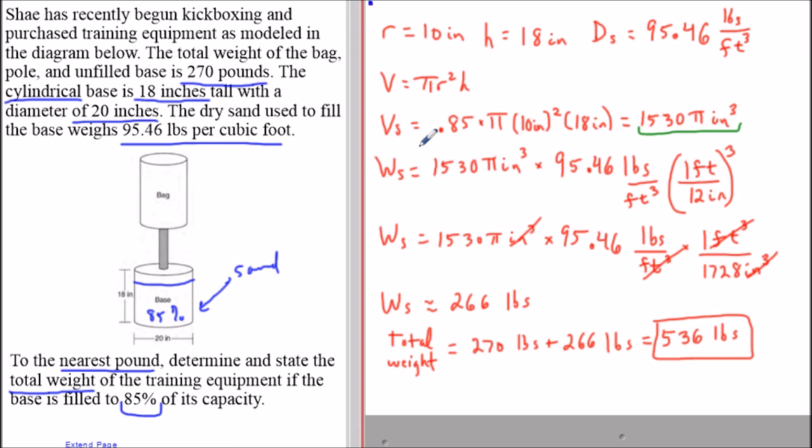To calculate the weight of the sand, we would still multiply the volume by the density, but the cubic inches would not cancel out the cubic feet. In this situation we would introduce the conversion factor one foot over 12 inches, raised to the third power because we're dealing with volume.